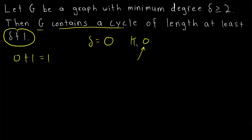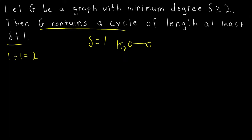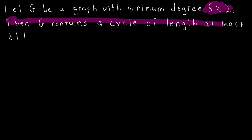The trivial graph has one vertex, its minimum degree is 0, and it has no cycle. If a graph has minimum degree delta equal to 1, then our result would state that this graph must contain a cycle of length at least 1 plus 1, which is 2. Again, there are no cycles of length 2, so if our graph were to have a cycle it would have to be at least length 3. But we could find a graph with minimum degree 1 that has no cycles — the complete graph on two vertices has minimum degree 1 and no cycles. But as long as the minimum degree is greater than or equal to 2, our result holds.